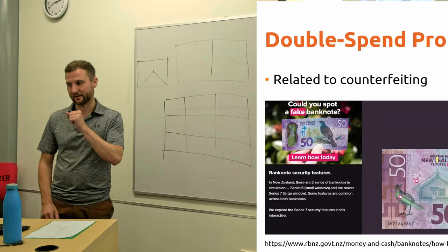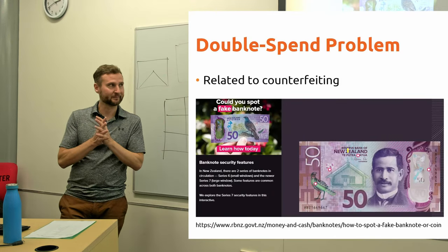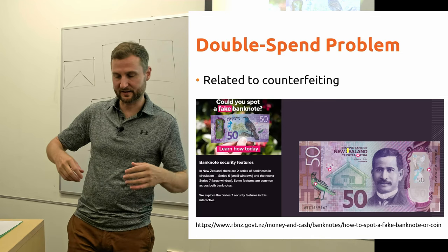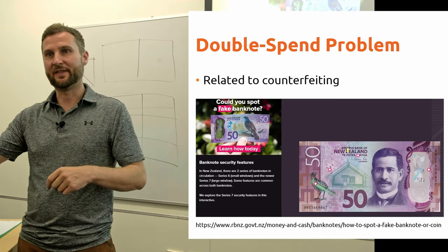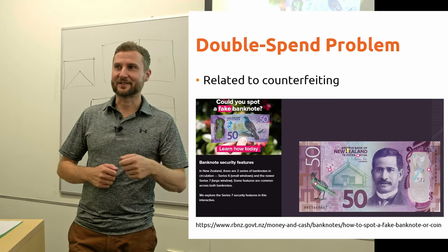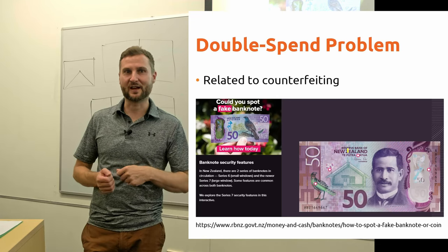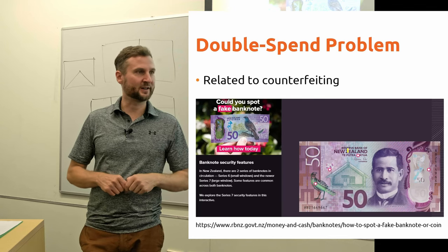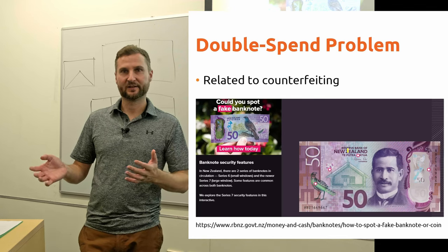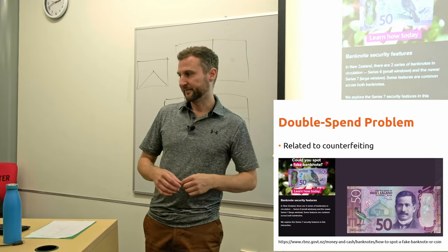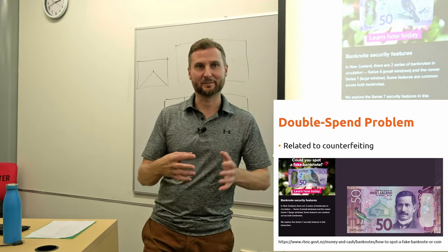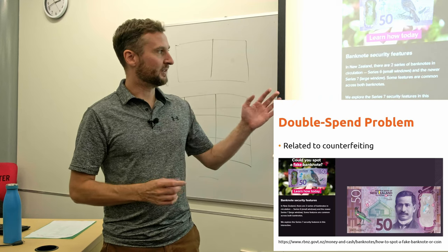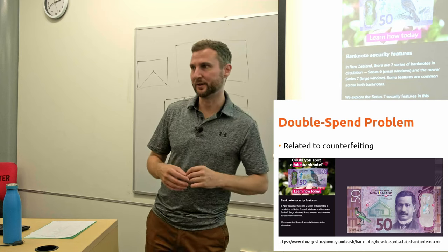Okay. So digital cash. Why is it so hard? So the double spend problem is related to this idea of counterfeiting. So double spending, it's as it sounds like, can you spend a $50 note and then spend it again? And it's like, well, if it's cash, you have to give that note to someone else and then it's theirs. So you can't go take it from them and spend it again. So if you were to try to double spend physical bank notes, you could try to counterfeit them.